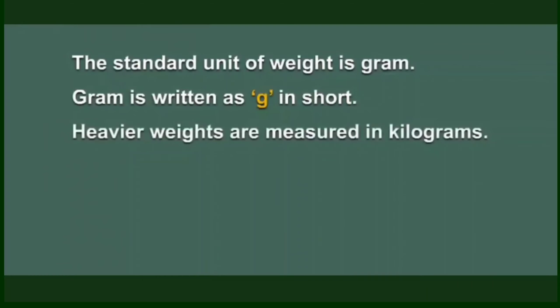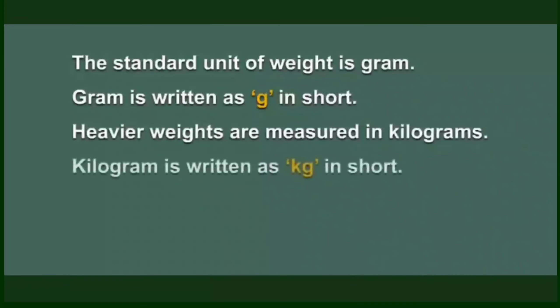Heavier weights are measured in kilograms. Kilogram is written as kg in short. Light objects are weighed in grams and heavy objects are weighed in kilograms. One kilogram has 1000 grams.